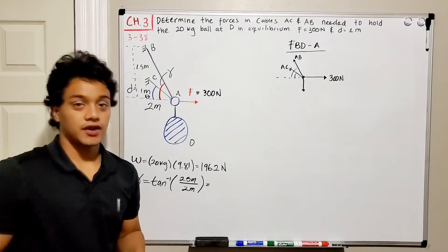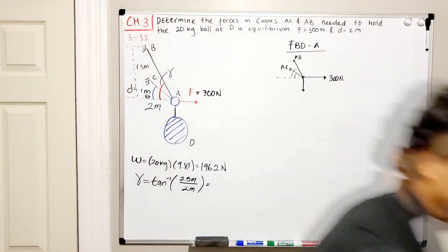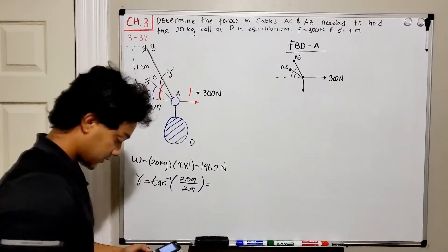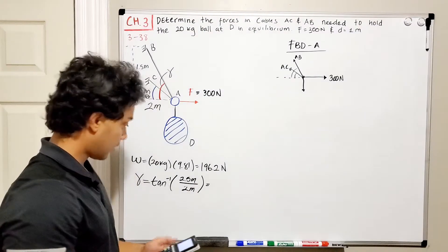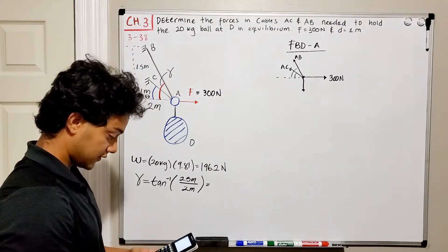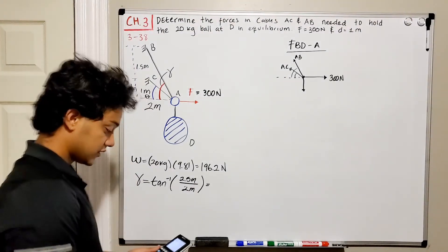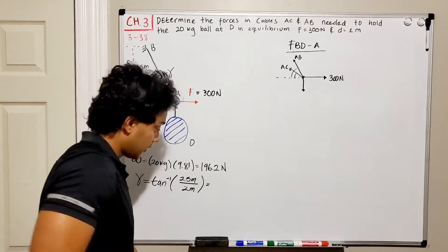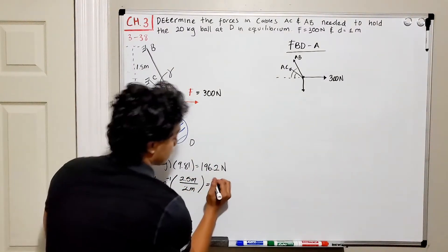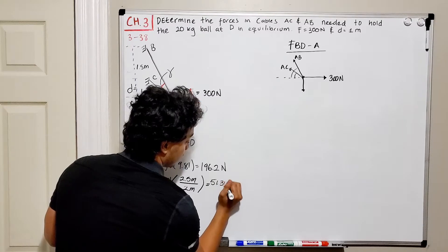We can use our calculator. So we got inverse tangent of 2.5 divided by 2, and it's equal to 51.34. So this is equal to 51.34 degrees.